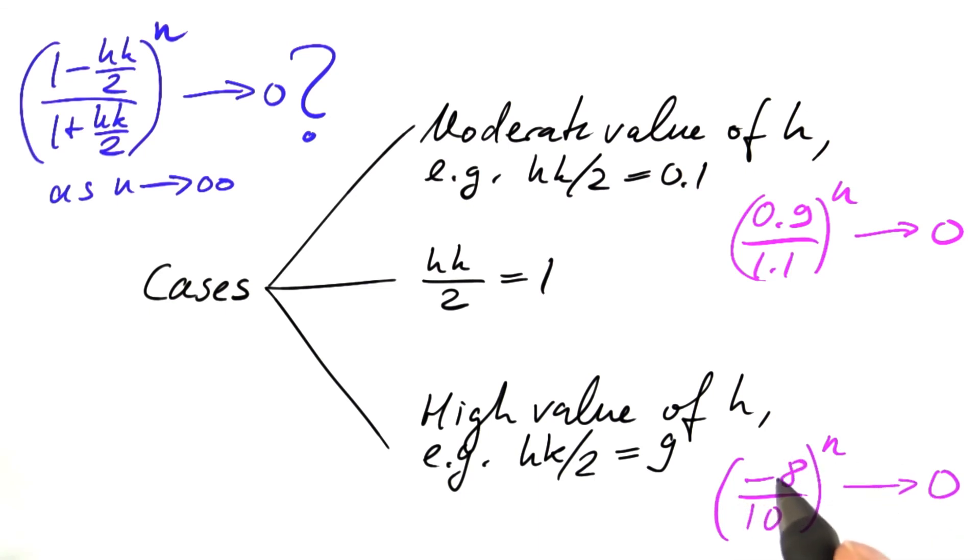But you see that this convergence comes along with an oscillation. The sign changes from minus to plus to minus to plus as we form even powers and odd powers. The result has a positive sign. For odd powers, the result has a negative sign. So we see some kind of decaying oscillation here.